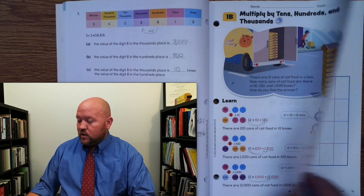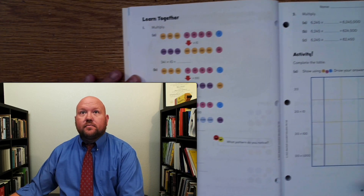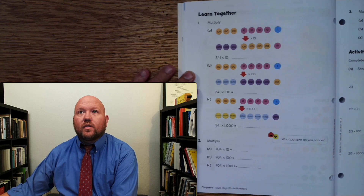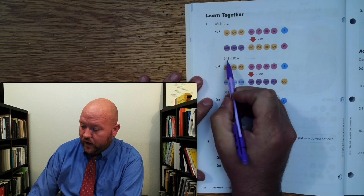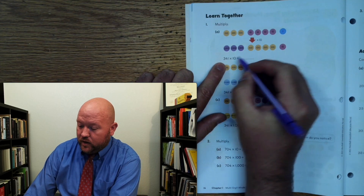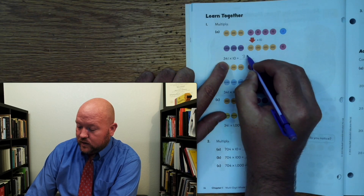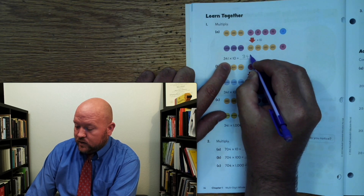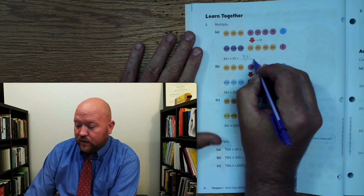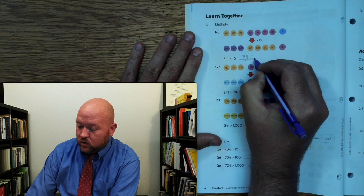Let's turn to page 14. So here we have 341 times 10. What are we going to do? This is going to move to the thousands place, hundreds place, the tens place. I have a place value open — what do I put there? I put a zero to hold that place value.